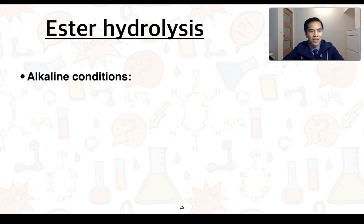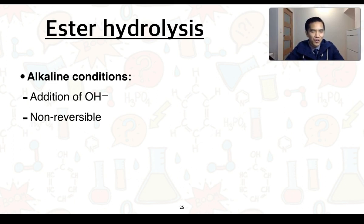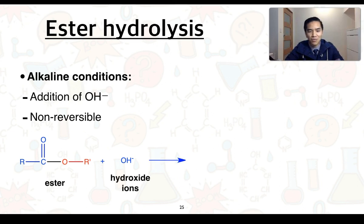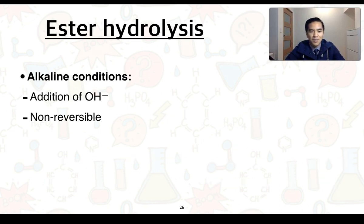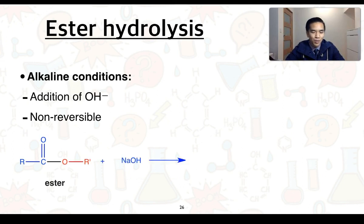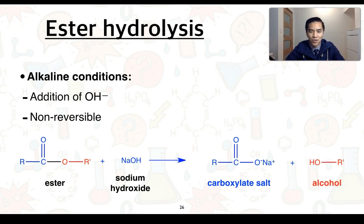In terms of alkaline conditions, this occurs in the presence of hydroxide ions. The benefit of alkaline hydrolysis is that it's non-reversible. Note that we don't expect you to know how to write these equations — just to determine the products upon acidic or alkaline hydrolysis. In the presence of hydroxide ions, our ester is going to form what we call a carboxylate anion. The second product — the alcohol — is virtually the same as in acidic conditions. If we add sodium hydroxide specifically, instead of forming a carboxylate anion, we can say it forms a carboxylate salt. The second product, the alcohol, stays as is.